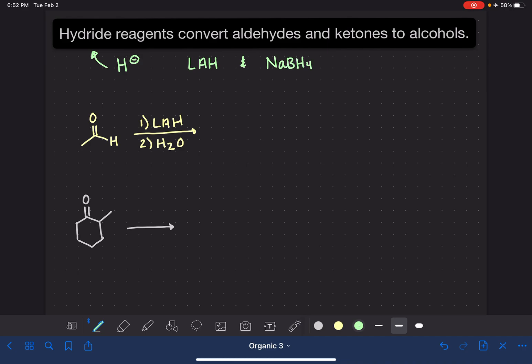In this video, I'm going to give you one example and one mechanism of a hydride reagent converting an aldehyde or ketone to an alcohol. For our first example, we have an aldehyde reacting with lithium aluminum hydride. This is a two-step process: step one, the hydride reagent; step two, water.